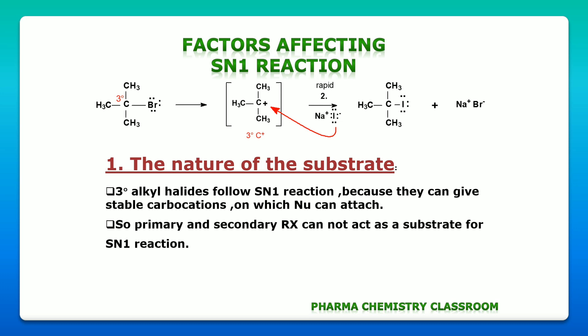Now we will see the nature of the substrate. Here you see this is an example for SN1 reaction. We know the mechanism of SN1 reaction where tertiary alkyl halides undergo the reaction. So tertiary alkyl halides undergo SN1 reaction, while primary and secondary alkyl halides cannot act as a substrate for SN1 reaction.